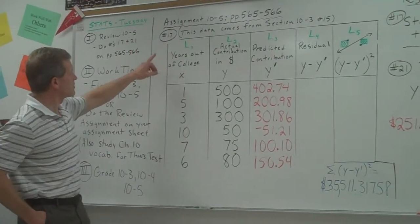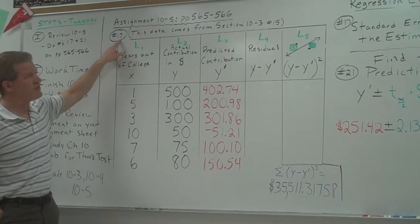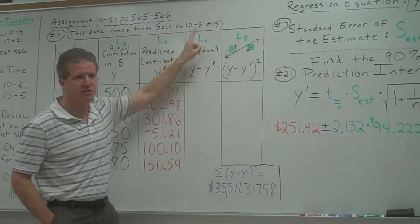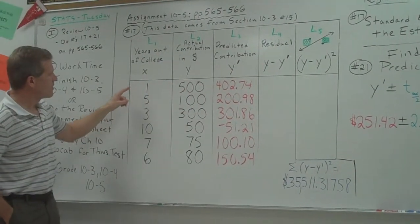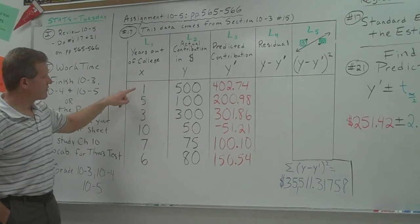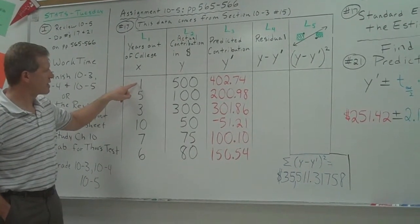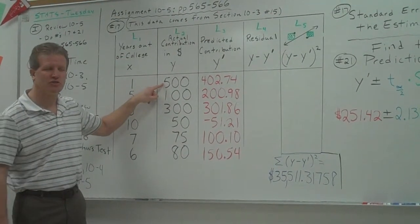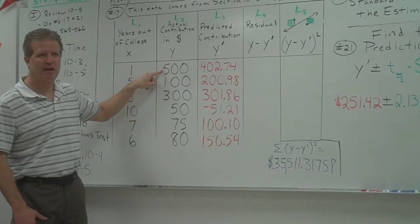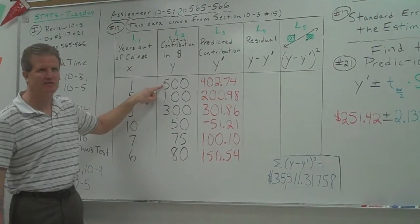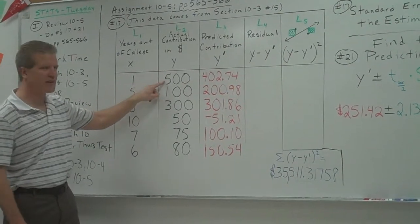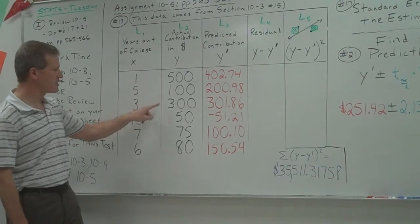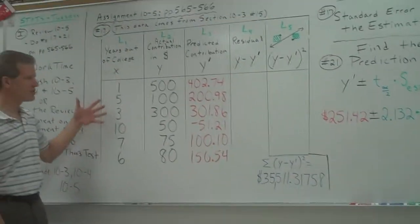Okay, so this is number 17 on assignment 10-5 and the data actually comes from section 10-3 number 15. So you have to look back a couple of sections to get the data. What it is, they've chosen six people and they've asked them how many years they've been out of college. Like this person's been out of college one year. Then they look at how much of a contribution they give back to their college.